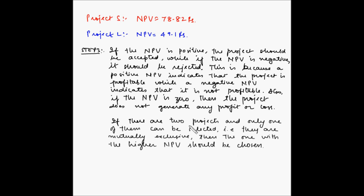If there are two projects and only one can be selected — that is, they are mutually exclusive — the one with the higher NPV should be chosen. Both Project S and Project L have a positive NPV, so if they are independent, both can be accepted. However, if they are mutually exclusive, Project S should be chosen as it gives a higher NPV, meaning it will generate more profit.